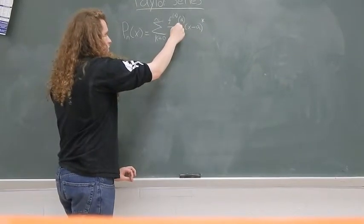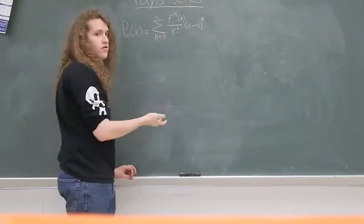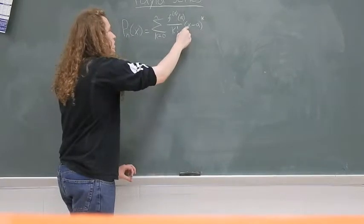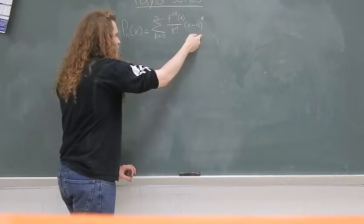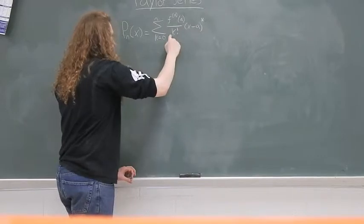Plug in the number that it's centered around, which oftentimes is zero, multiply it by x minus wherever it's centered, to the power of k.